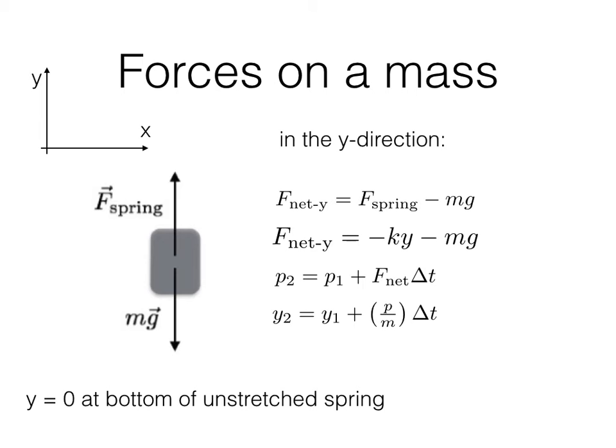Once I know the force, I can find the new momentum using the momentum update formula, and then I can use the position update formula. Notice that I have p over m times delta-t — that's because p over m is the velocity. So this is still the position update formula, but we're using p over m instead of the velocity.